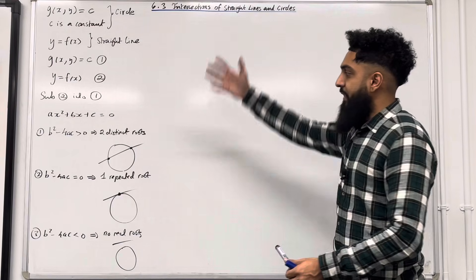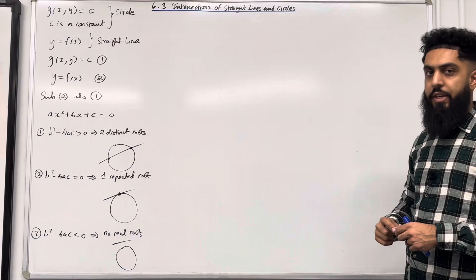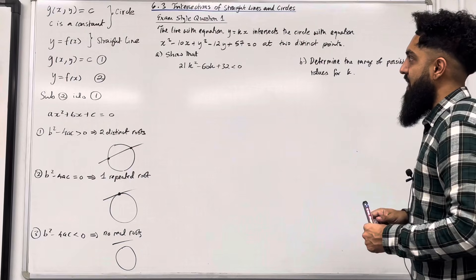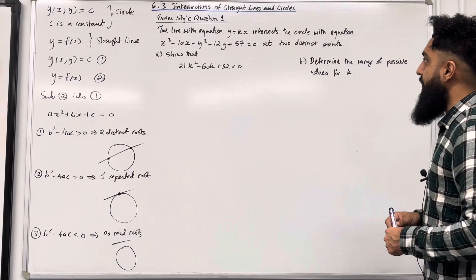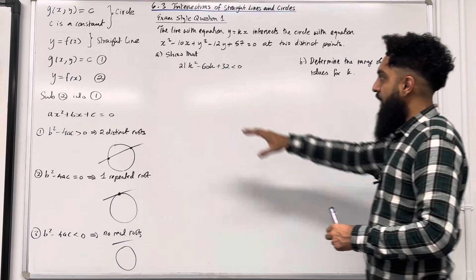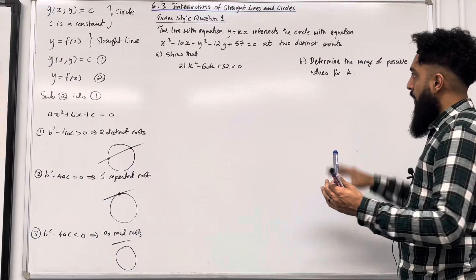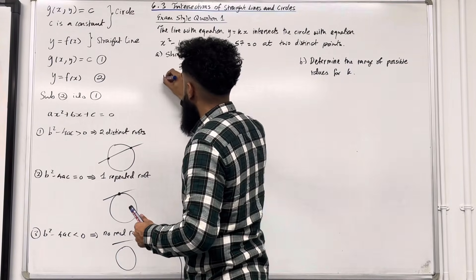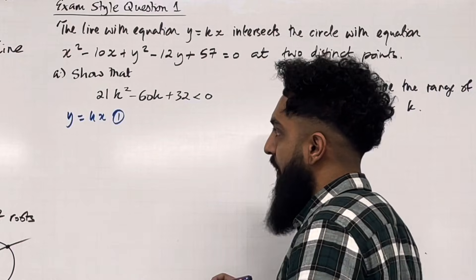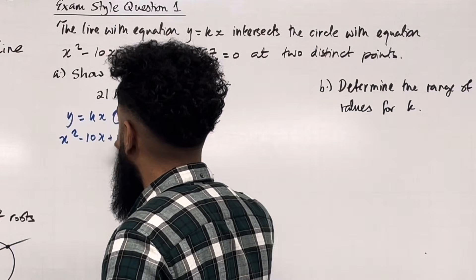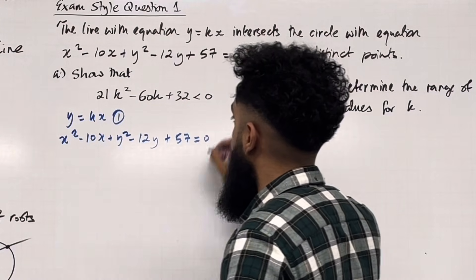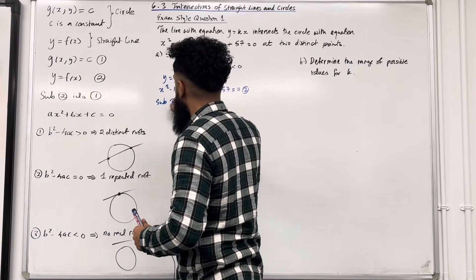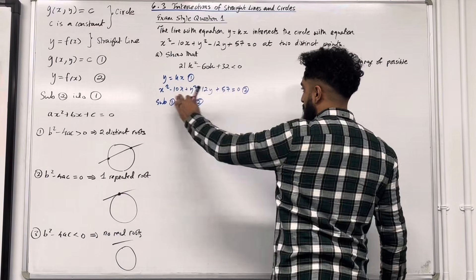Those are the key facts we'll use to answer two exam-style questions. Exam-style question 1: the line with equation y equals kx intersects the circle with equation x squared minus 10x plus y squared minus 12y plus 57 equals 0 at two distinct points. Part A: show that 21k squared minus 60k plus 32 is less than 0. Part B: determine the range of possible values for k. For part A, the equation of the line is y equals kx (equation 1), and the equation of the circle is x squared minus 10x plus y squared minus 12y plus 57 equals 0 (equation 2). Substituting equation 1 into equation 2, replacing the y's with kx.